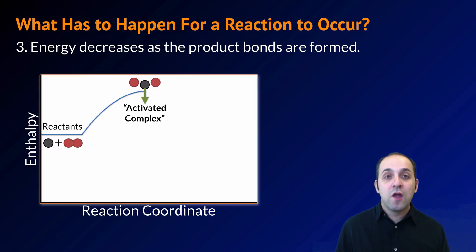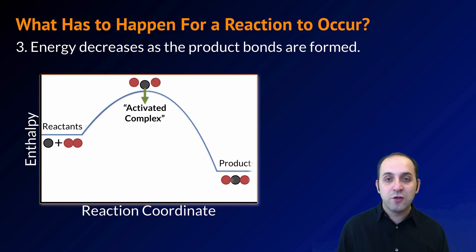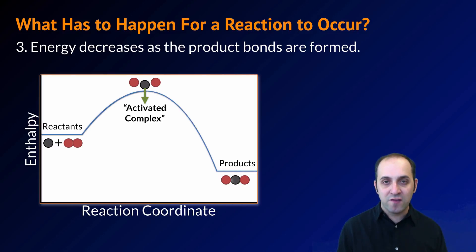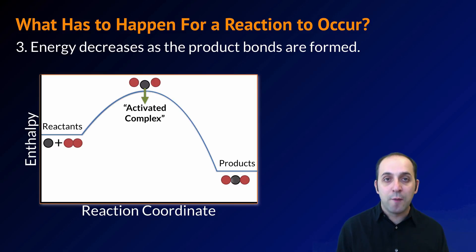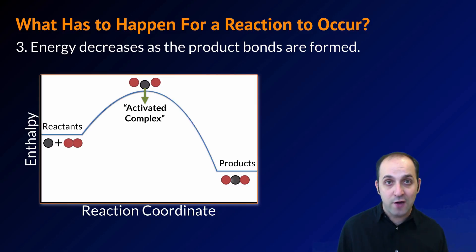Then the reactants are going to react. As they do that, bonds are going to be made, energy is going to be released, and our products are going to have some final amount of energy stored in their bonds. That's what needs to be shown in a potential energy diagram.